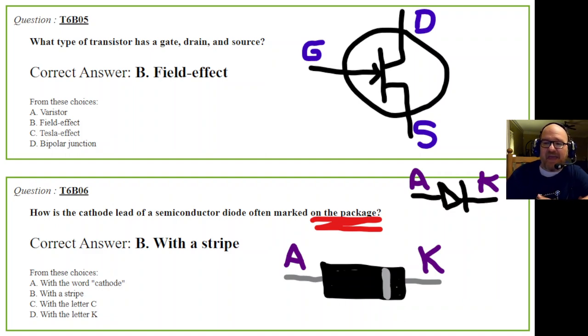Question 6: How is the cathode lead of a semiconductor diode often marked on the package? I underlined this in red. This is my crude drawing of a diode. Anode is A, cathode is K. But on the actual package, it's marked with a stripe. Most rectifier diodes are a black body with a silver stripe. The correct answer is with a stripe - not the word cathode, not C, not K. A stripe, as I've shown here.